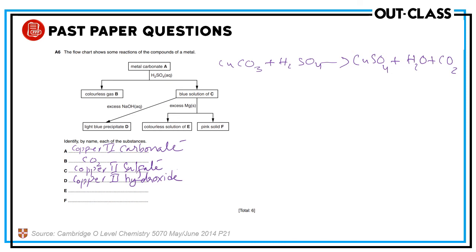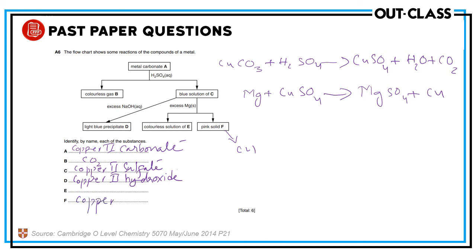Magnesium added to copper sulfate: magnesium is more reactive than copper, so it will displace copper, forming magnesium sulfate plus copper metal. The pink solid will be copper metal — not copper(II), just copper metal. And magnesium sulfate will form a colorless solution, as it's a non-transition metal salt.